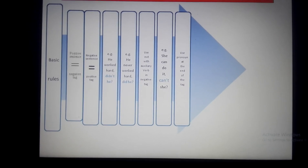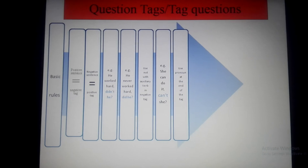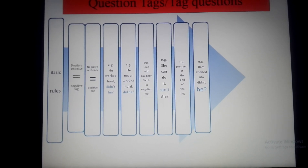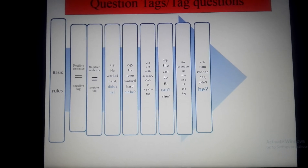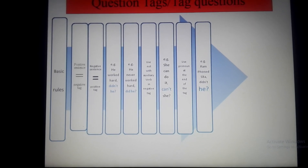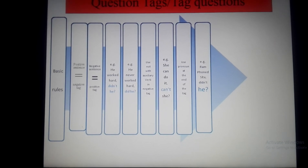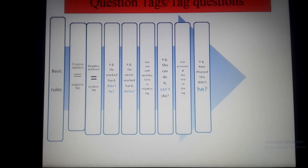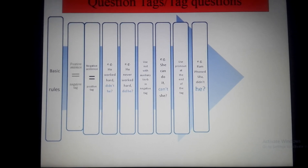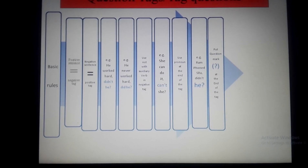The next rule: use a pronoun at the end of the tag. For example, 'Ram found Sita' — the tag is 'didn't he.' You use the pronoun 'he' at the end of the tag to refer to Ram. You cannot write 'didn't Ram' because the rule says we have to use a pronoun at the end of the tag.